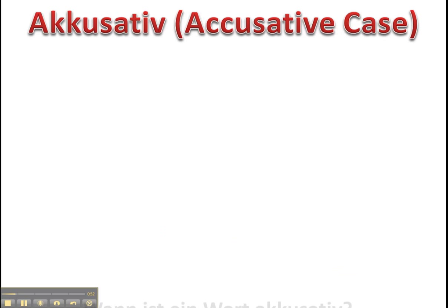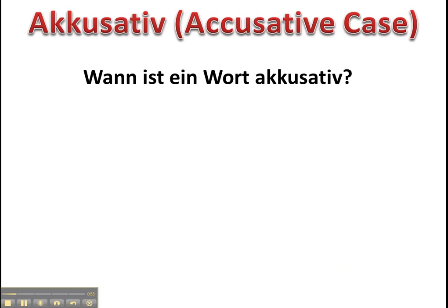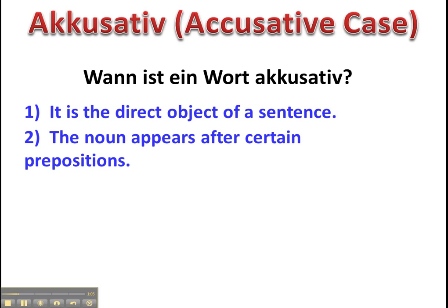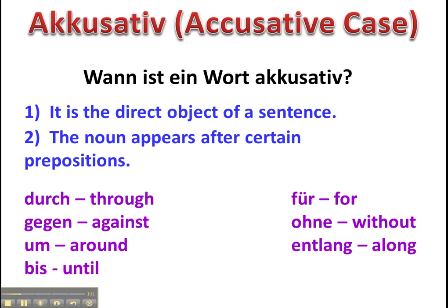Akkusativ. Wann ist etwas akkusativ? When is something accusative? Number one, it's a direct object of a sentence. The direct object is what receives the action of a verb. Or it comes after certain prepositions in German. These prepositions are Durch, Für, Gegen, Ohne, Um, Entlang und Bis. Entlang is a little different from the others because it appears normally after the noun. For more information on that, you should see the video on accusative case prepositions.